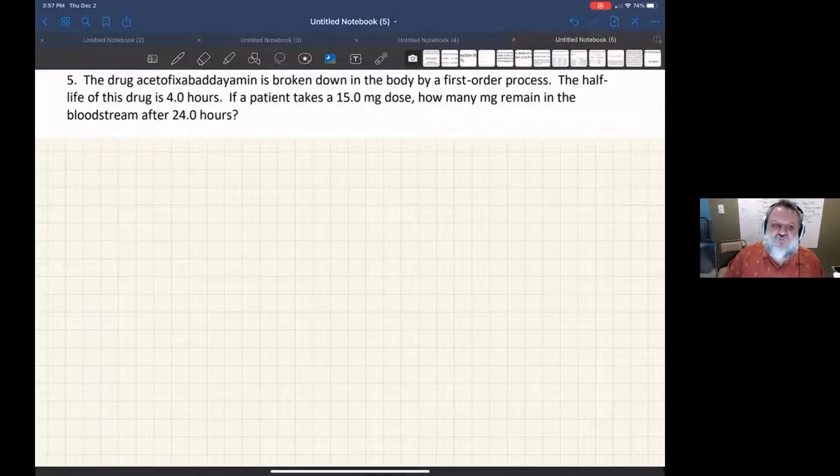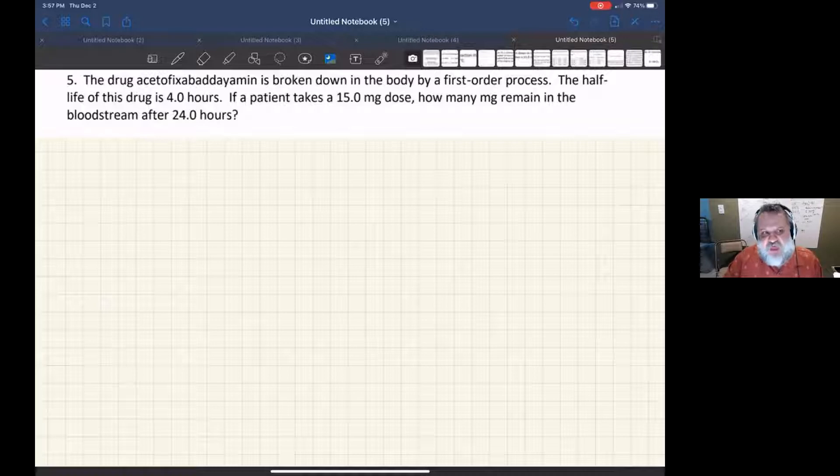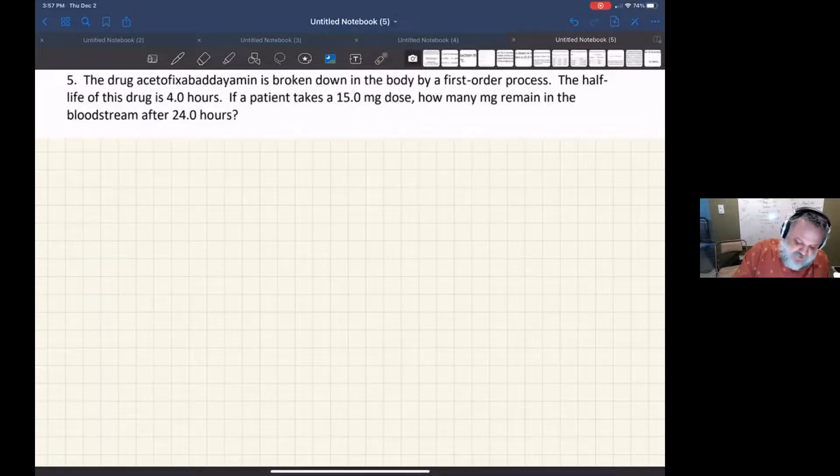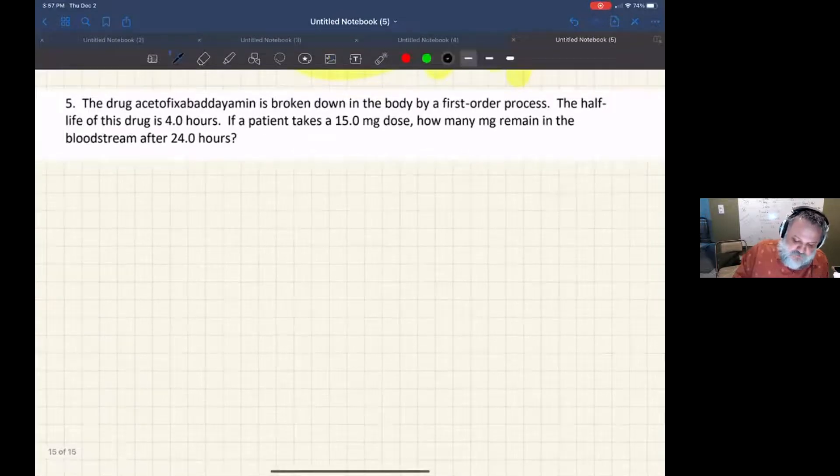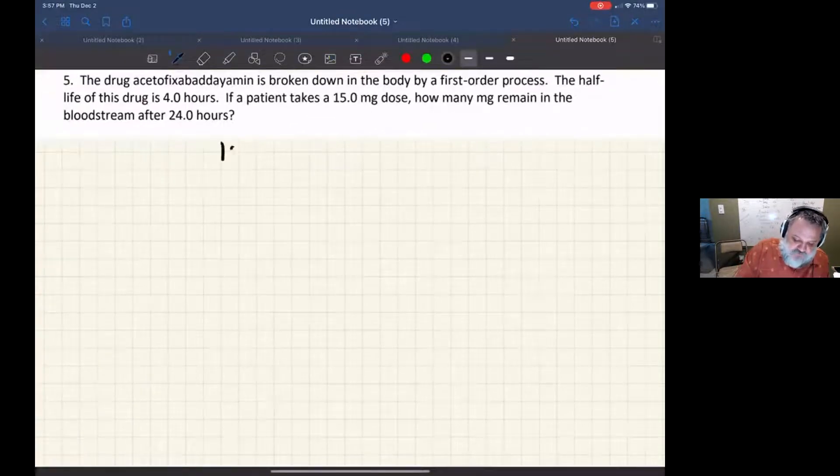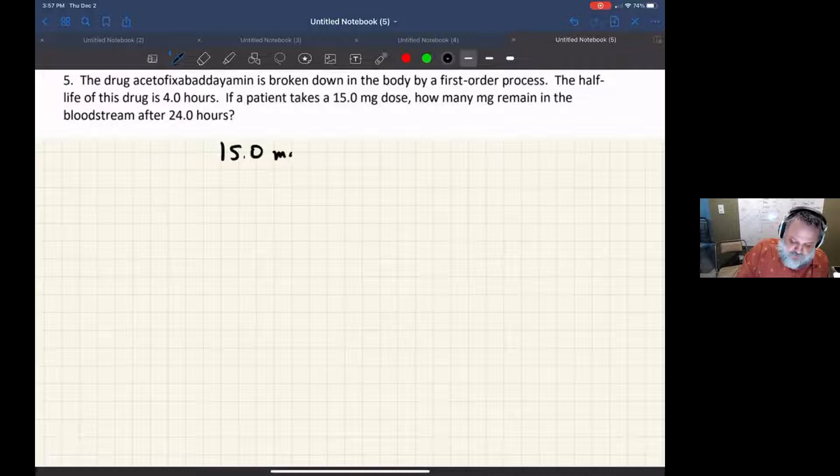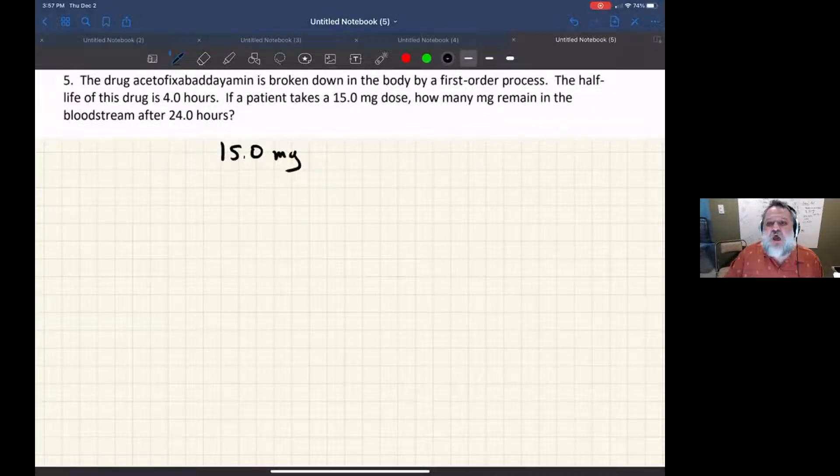So it says that this drug, Acetofixibadiamine, is broken down in the body. It's a first-order process. It tells you that the half-life of this drug is four hours, and the patient takes 15 milligrams. So we have a 15.0 milligram dose. How many milligrams remain in the bloodstream after 24 hours?